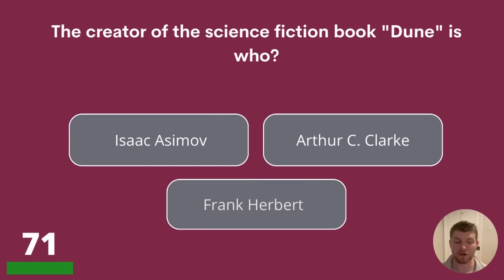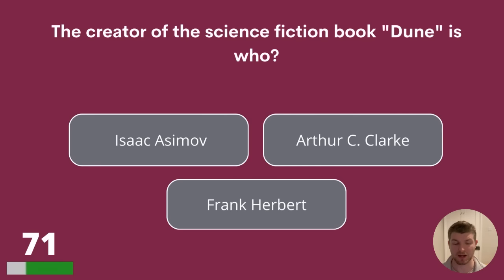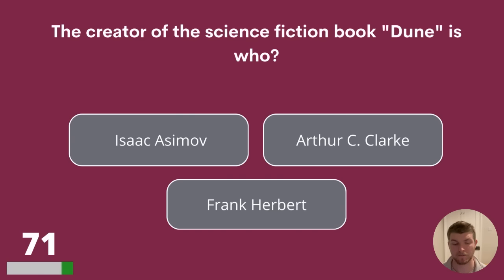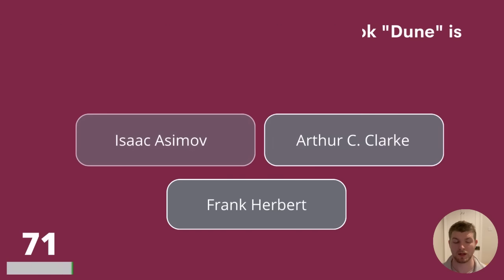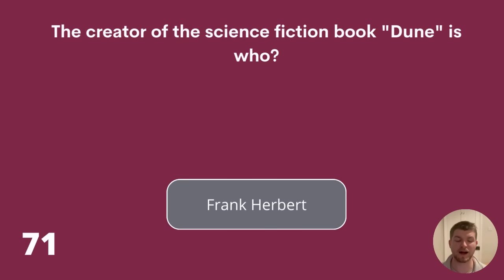Question 71. The creator of the science fiction book Dune is who? Isaac Asimov, Arthur C. Clarke, or Frank Herbert? The answer is Frank Herbert.